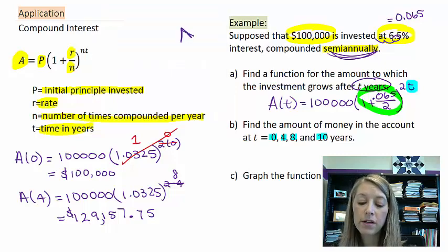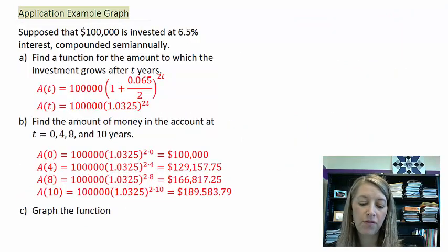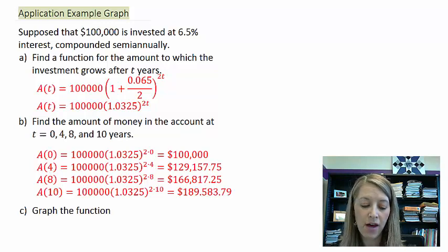If I wanted to do this for eight and ten, I would just plug in eight and ten the exact same way. So I have those simplified for us here. And you see, after zero years, I have $100,000. After four years, I have this amount that we just specified. Eight years, I have $166,000. And after 10 years, I have $189,000.